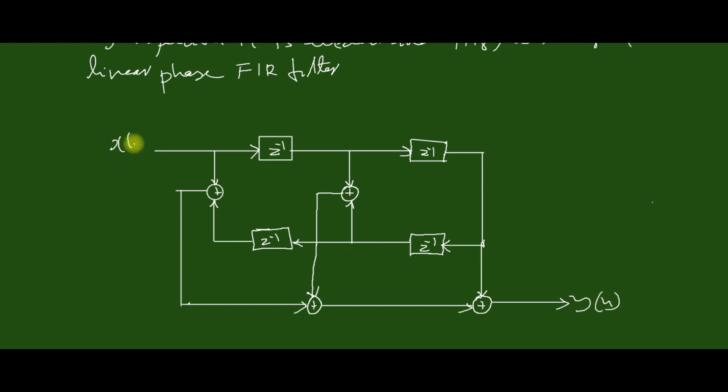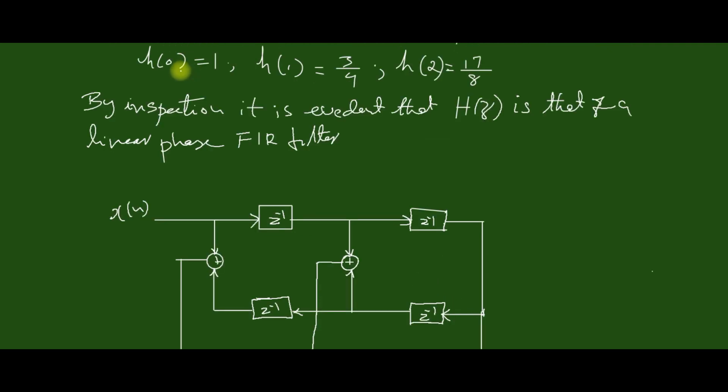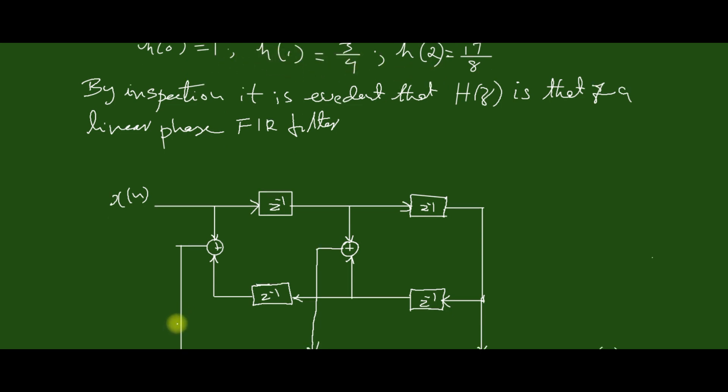Now that's input x(n) and output y(n). So here we have four delays and four adders. Next, give the impulse response values: H(0) = 1, H(1) = 3/4, H(2) = 17/8. Here it is H(0), it is H(1) which is equal to 3/4, here it is H(2) which is equal to 17/8.